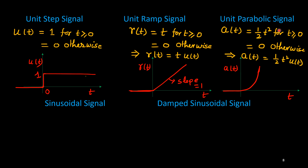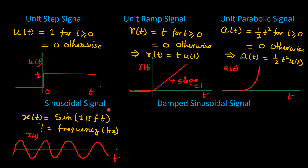For the parabolic signal, a(t) is used and it equals one-half t squared for t greater than 0, otherwise 0. There is an important relationship among these three signals: if you integrate the unit step you get the unit ramp, and if you integrate the ramp you get the parabolic. Conversely, the derivative of parabolic gives ramp, and the derivative of ramp gives the step signal.